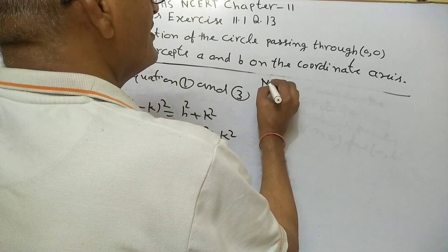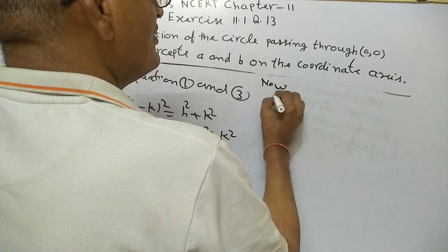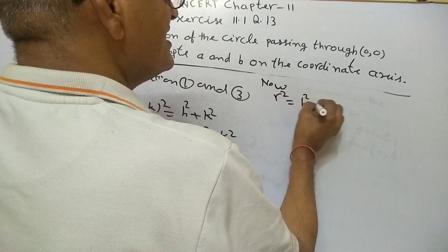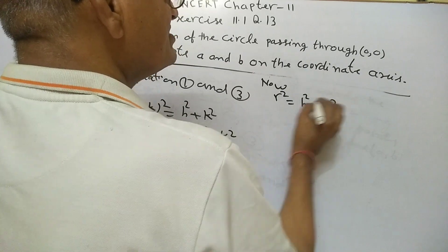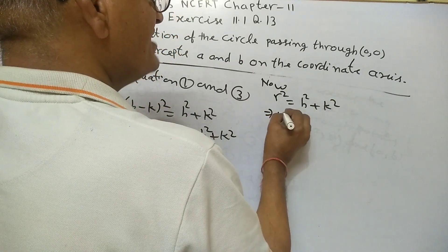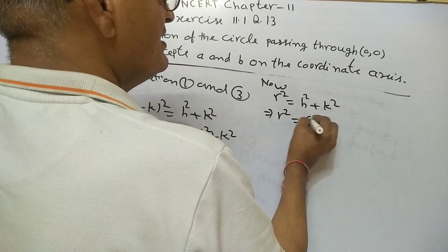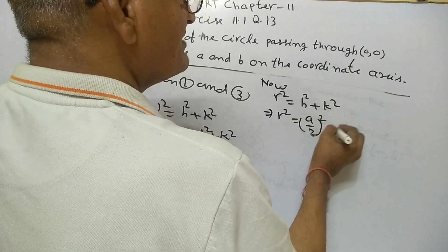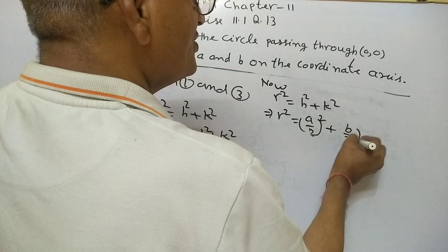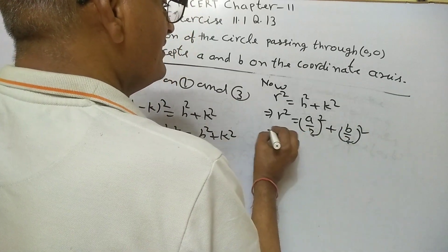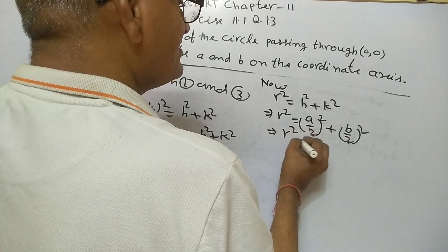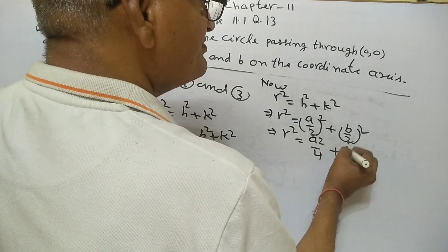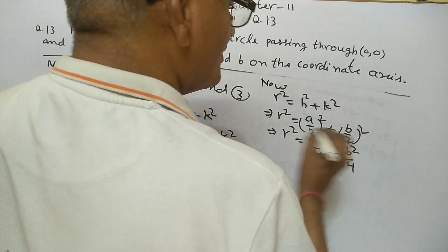Now, r² = h² + k² = (a/2)² + (b/2)², which gives r² = a²/4 + b²/4.